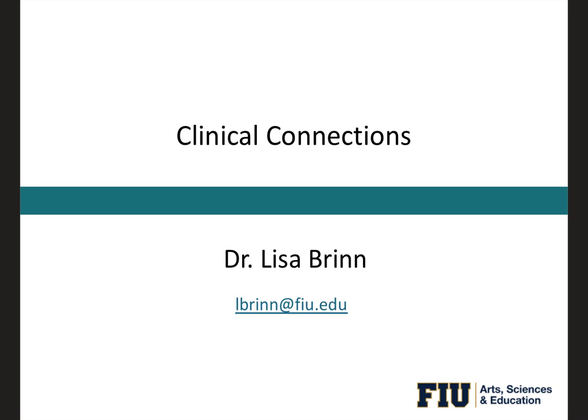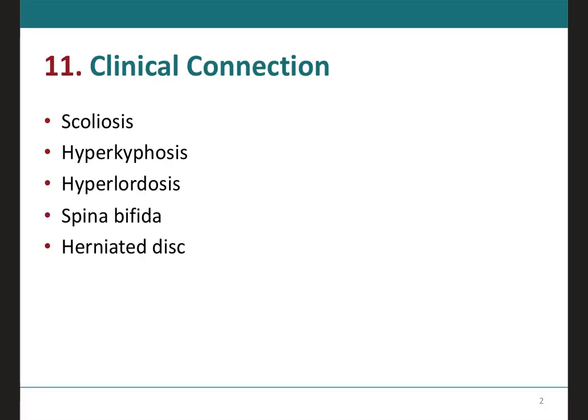Here we're going to be covering a few clinical cases for the axial skeleton. In this module, we will be covering five clinical cases. The first three have to do with the abnormal curvature of the vertebral column, which are scoliosis, hyperkyphosis, and hyperlordosis. And the last two have to do with abnormalities that have nothing to do with the normal curvature, which are spina bifida and the herniated disc.